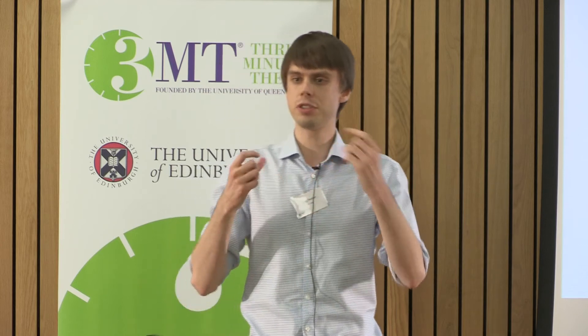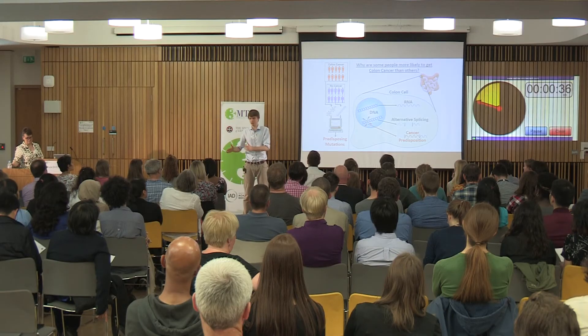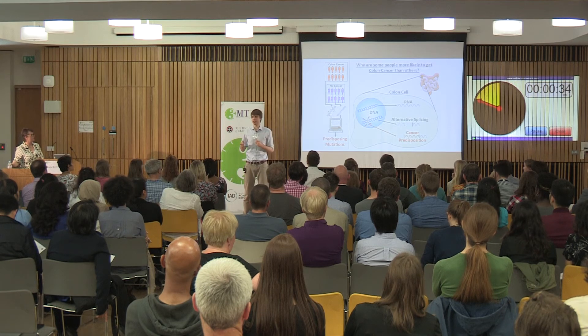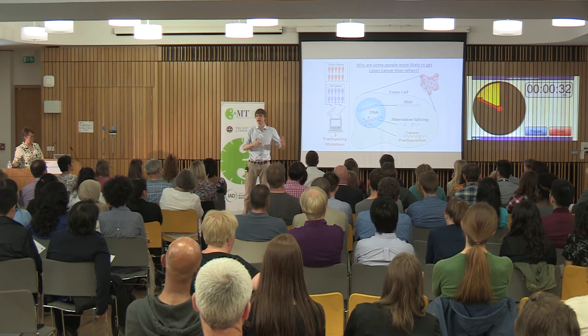Now, the way this links back to cancer predisposition is if people have a mutation in their DNA, that could cause a mistake in what word gets sent out in what order, and cells could get the wrong instruction. For example, instead of saying 'don't grow now,' a cell could be told 'grow fast now,' and over time, this could cause a tumour to develop.